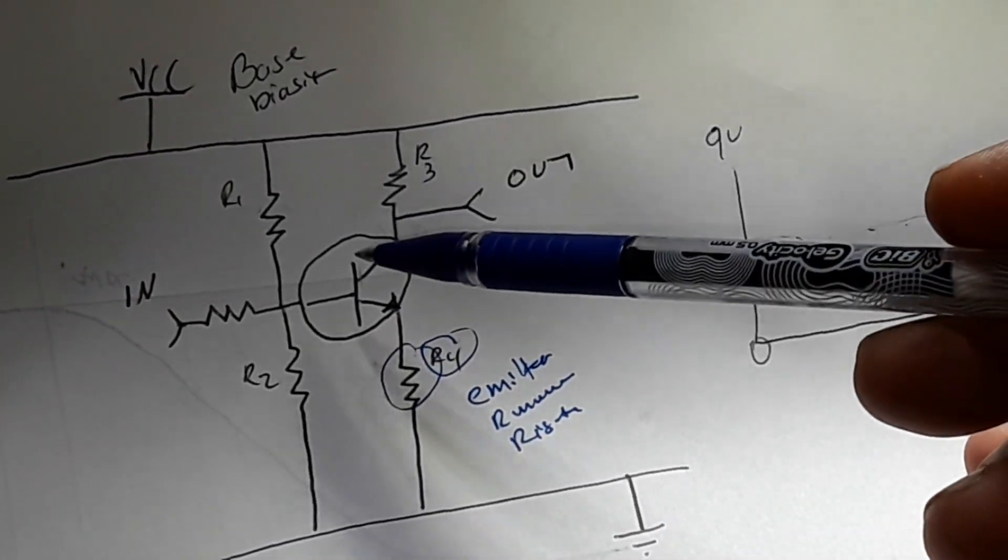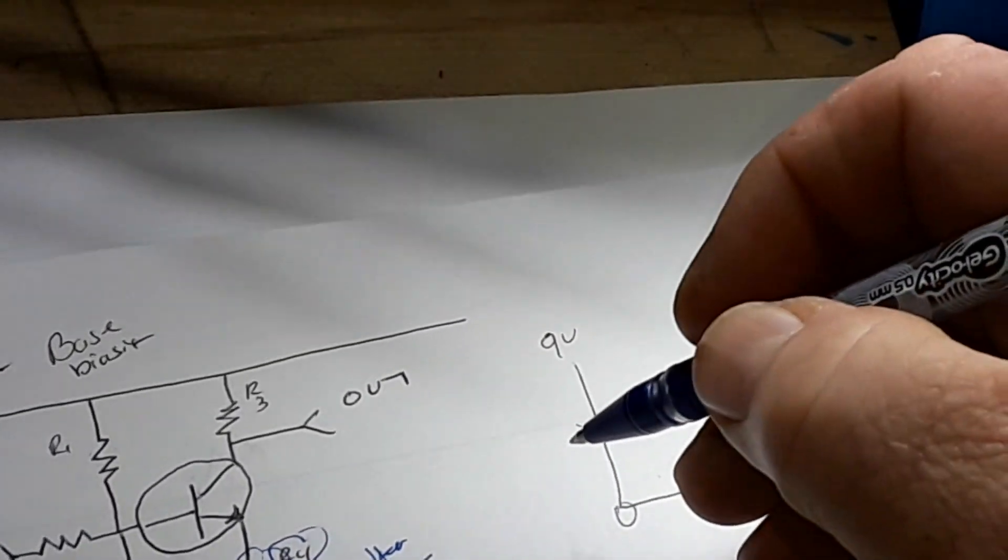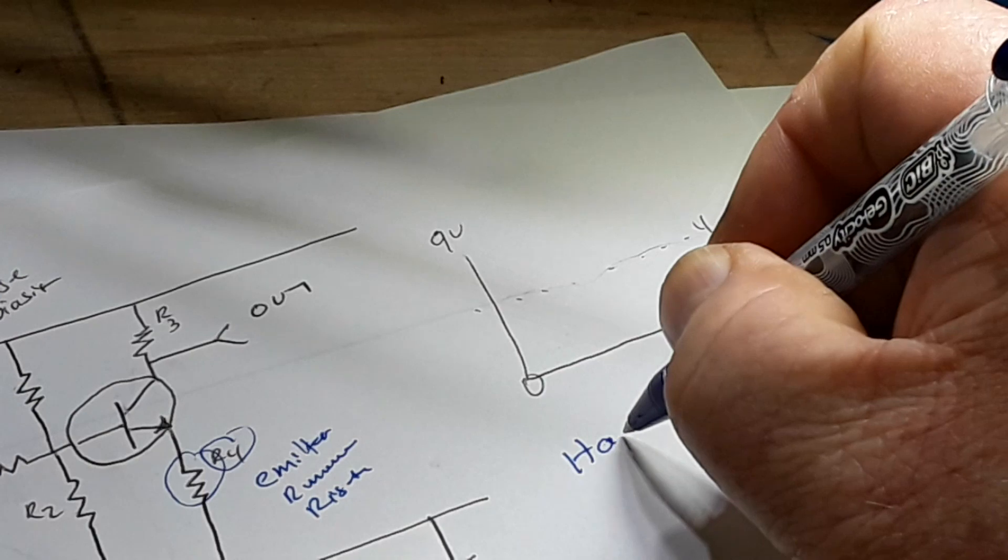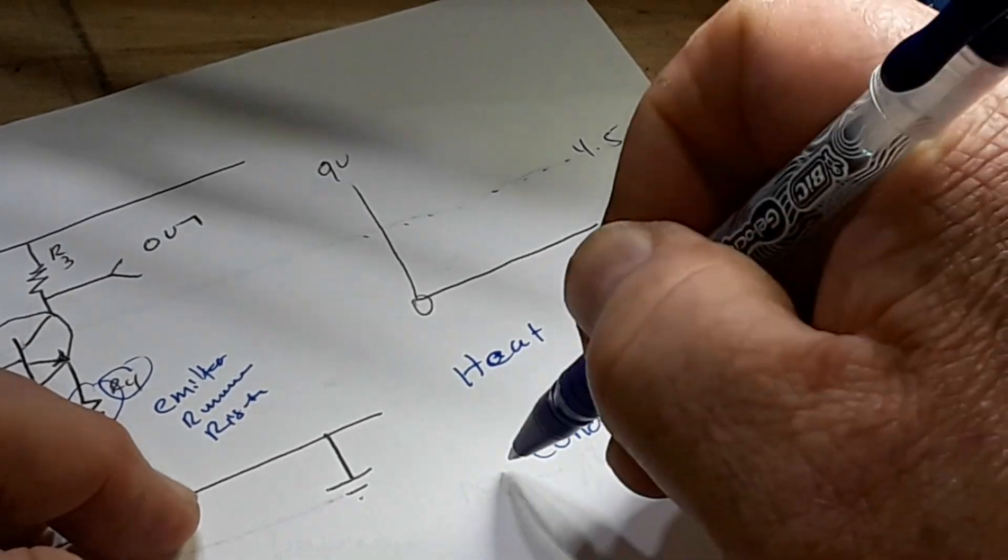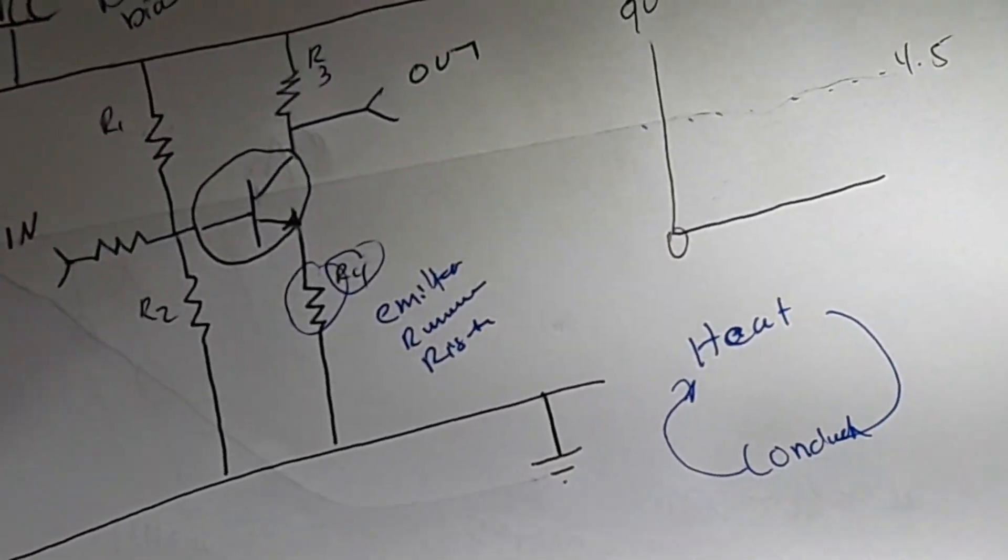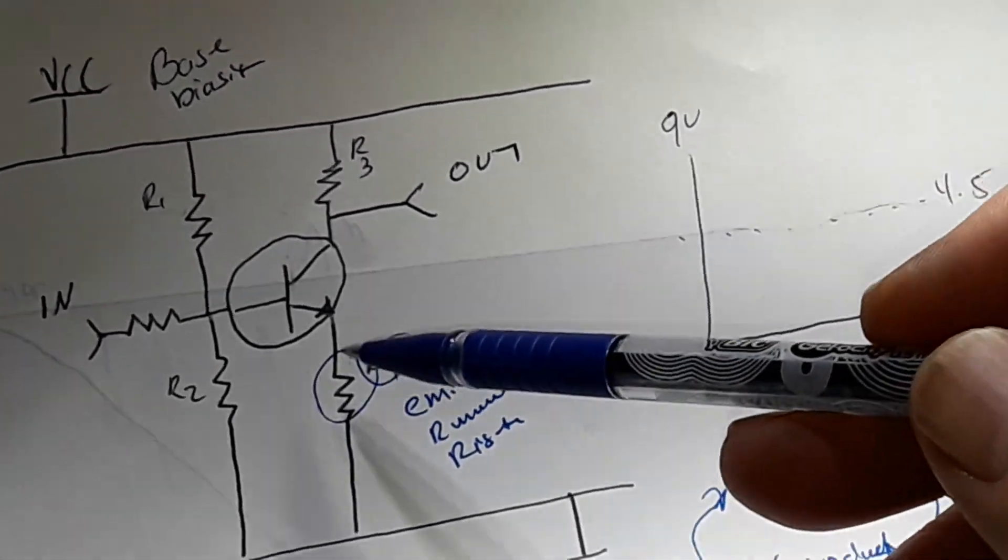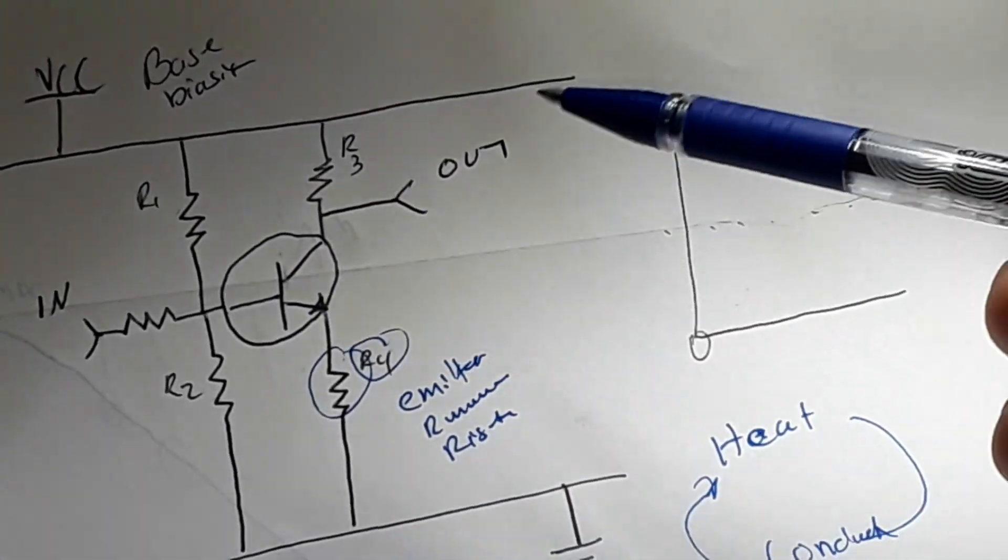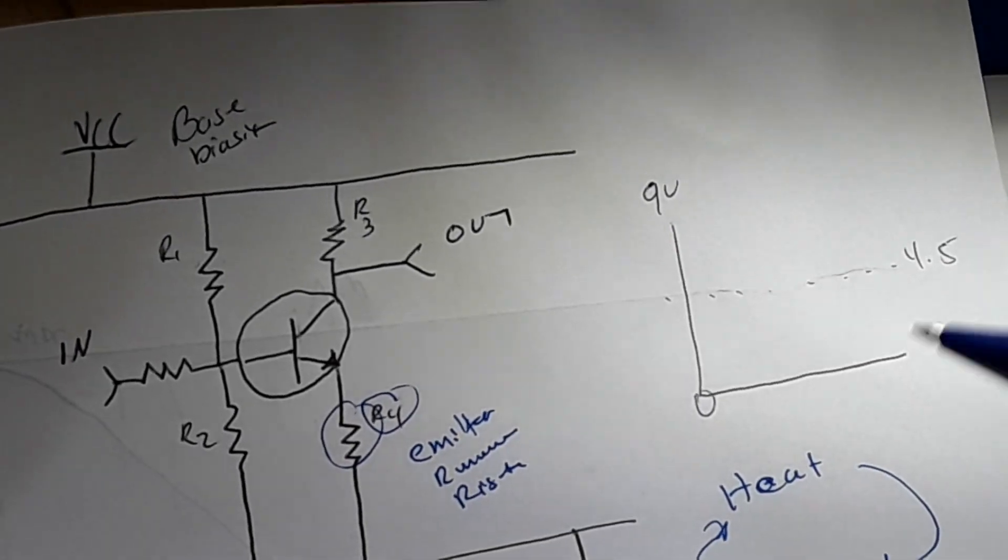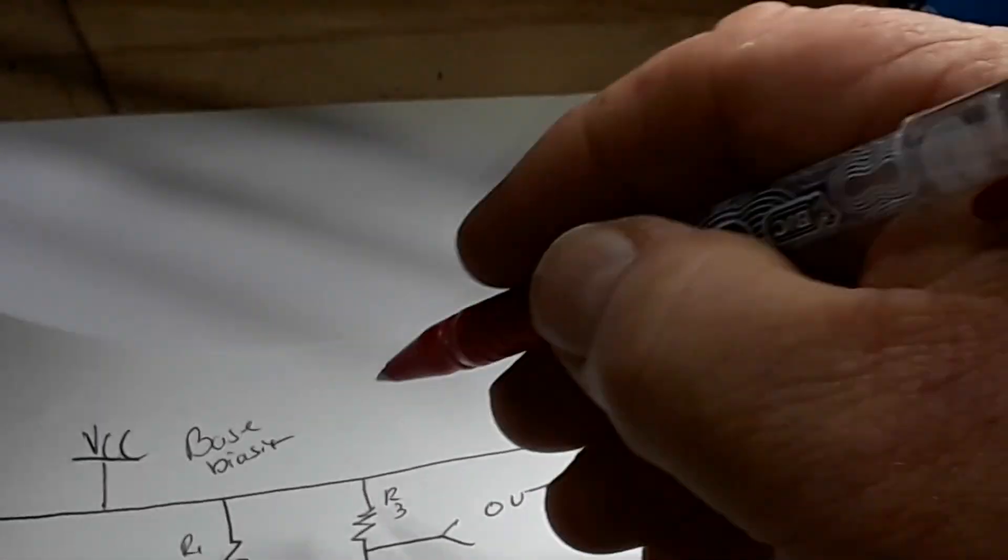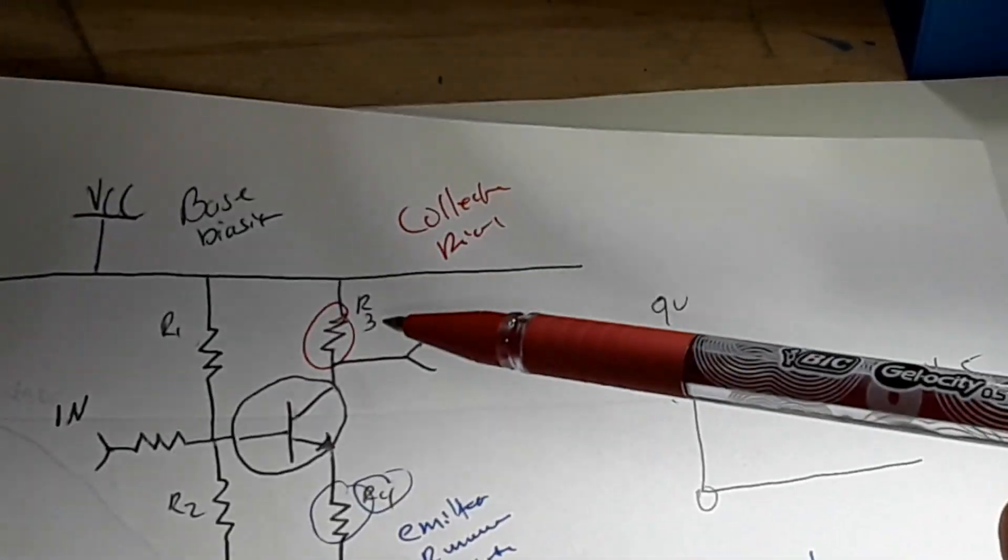By moving electrons through here, a byproduct of that work is heat. That's just basic physics. The hotter they get, the better they conduct. The better they conduct, the more they heat. So you've got heat leads to conduction which leads to heat. And without this to limit the conduction and therefore limit the heat, the transistor can go into a runaway mode and just burn up.